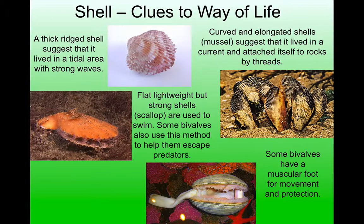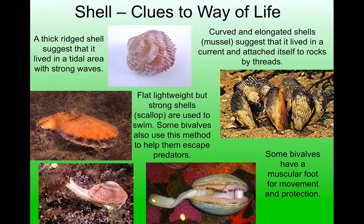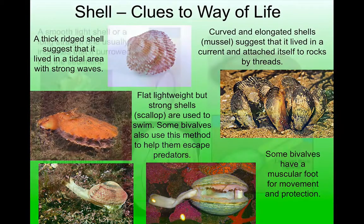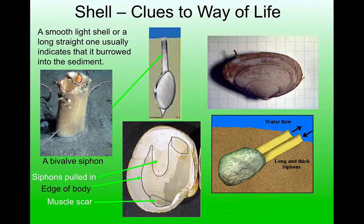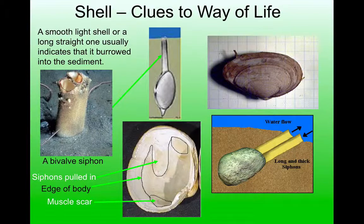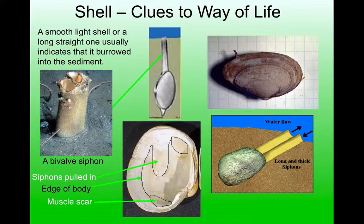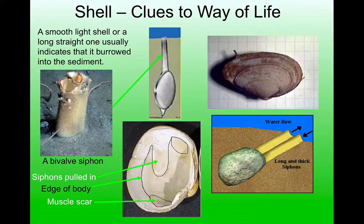Some bivalves have a muscular foot — a muscle that comes out of the bottom of the shell and can be used to dig or move the animal around, perhaps to protect itself. Or they may have a feature called a siphon. The siphon is unique to burrowing bivalves. Burrowing bivalves also tend to have long, smooth, thin shells that let them slip through mud easily. The siphon is a clever adaptation — like a snorkel. If the bivalve buries itself in the mud, it can extend the siphon back up to the surface to draw water in with food and excrete water out with waste.